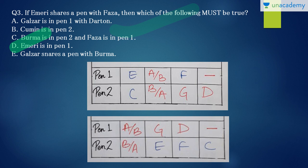Burma is in pen 2 and Faza is in pen 1. Okay. Burma is in pen 2 and Faza is in pen 1. But the other way round is also possible when Burma and Faza are together. Emeri is in pen 1. Emeri is in pen 1 but Emeri can also be in pen 2. Galzar shares the pen with Burma. Galzar shares the pen with Burma. Even this can be true. They can share pen 1 together or pen 2 together or may not share it at all. So the only must true option which seems correct to me is Cumin has to be in pen 2 for Emeri and Faza to share the pen together.